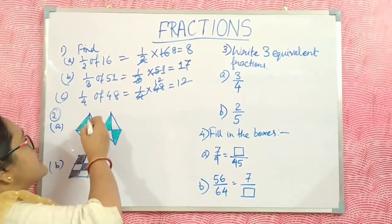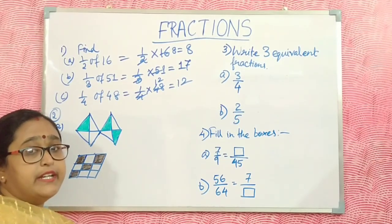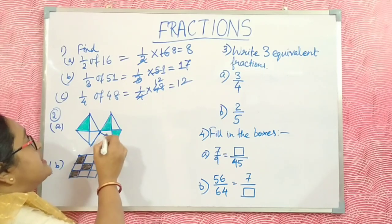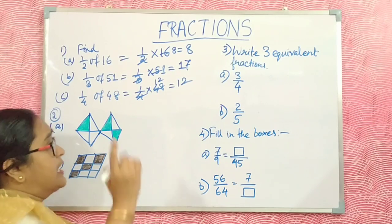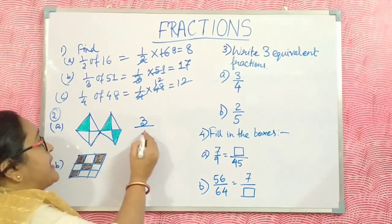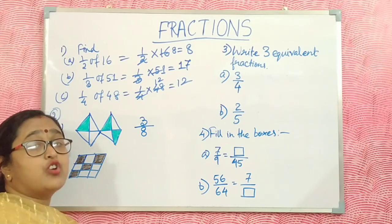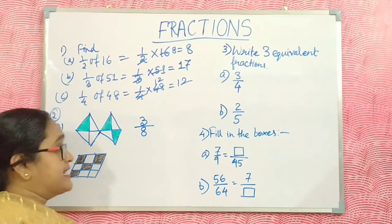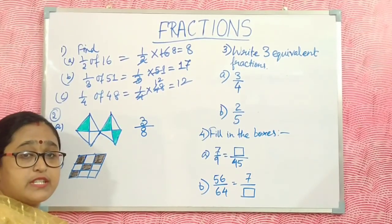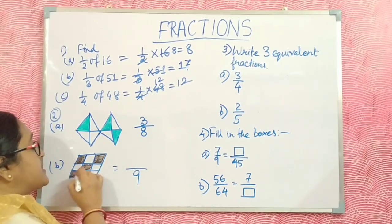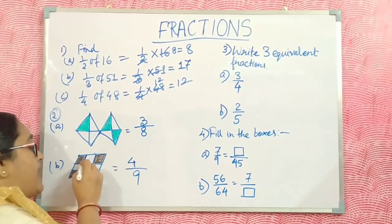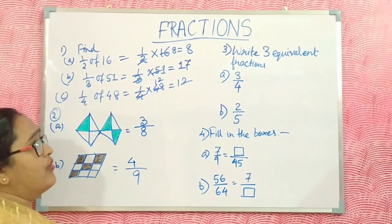Now write the fraction for the shaded portion. Here there are 3 shaded parts out of 8 total parts — this is 3/8. In the next figure, there are 9 portions and 4 parts are colored — this is 4/9.